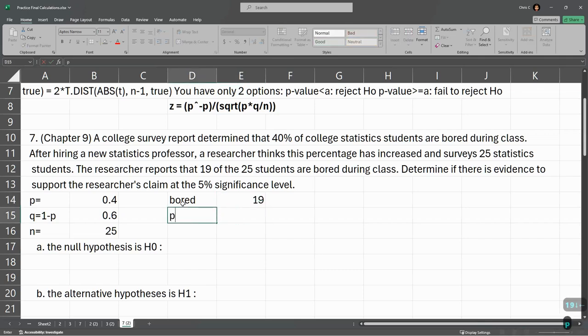So our P hat, which is the proportion in the sample, is 19 divided by 25. So that gives us the proportion in the sample that is bored, and that's 76%. So right away, it went from 40% originally to 76%. That seems like a big jump.